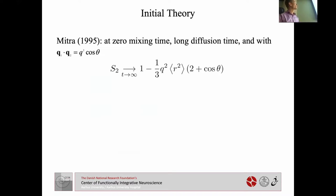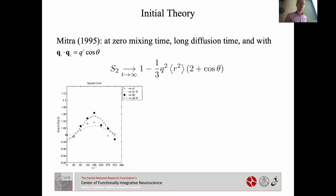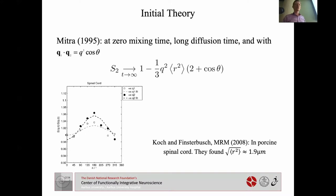Mitra showed that for long diffusion times compared to domain sizes, the DDE signal is proportional to R², where R is the radius of gyration. So you could vary the angle for long diffusion times to get a measure of domain size — for example axon diameter. Jürgen Finsterbush's group did this in pig spinal cord, observed cosine-theta behavior, and extracted an effective axon size closer to 1 micrometer — reasonable and in good accordance with histology.